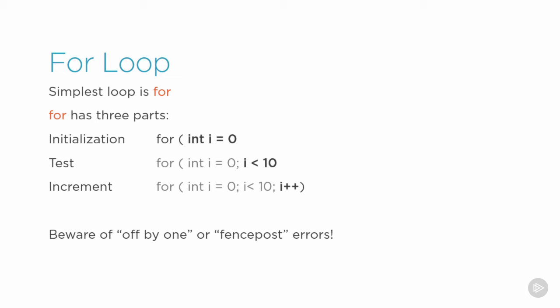Be careful about off-by-one errors, sometimes called fence post errors, where you count one too many or one too few. It's called a fence post error because a 10-foot fence takes 11 posts. Let's take a look at a demo of looping with the for loop.